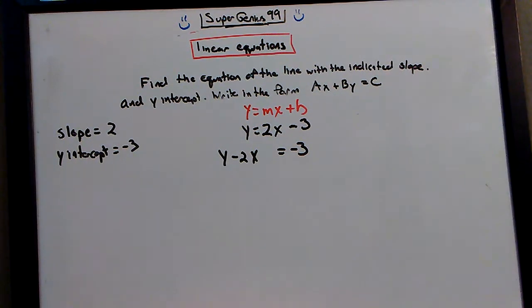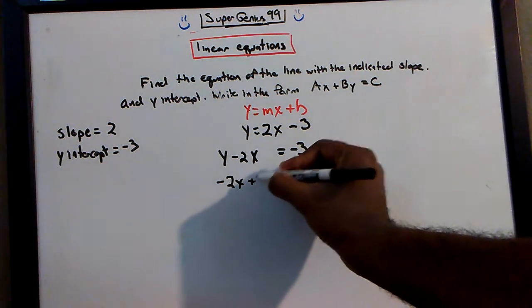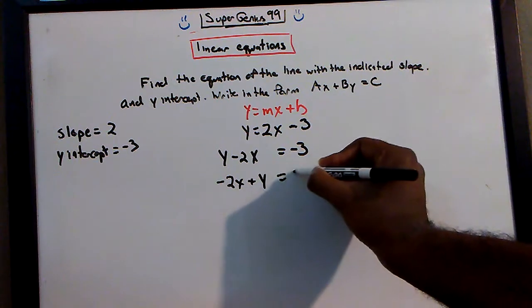You might be sitting there saying, wait, wait, wait. But we need to put our x first. Yep, you're right. Put the x first. Negative 2x plus y is equal to negative 3.